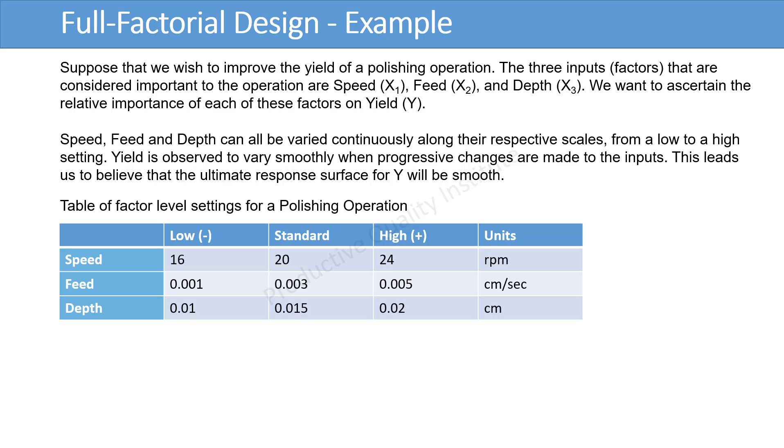Suppose that we wish to improve the yield of a polishing operation. The three inputs, factors that are considered important to the operation are speed x1, feed x2, and depth x3. We want to ascertain the relative importance of each of these factors on yield y. Speed, feed, and depth can all be varied continuously along their respective scales from a low to a high setting. Yield is observed to vary smoothly when progressive changes are made to the inputs. This leads us to believe that the ultimate response surface for y will be smooth.